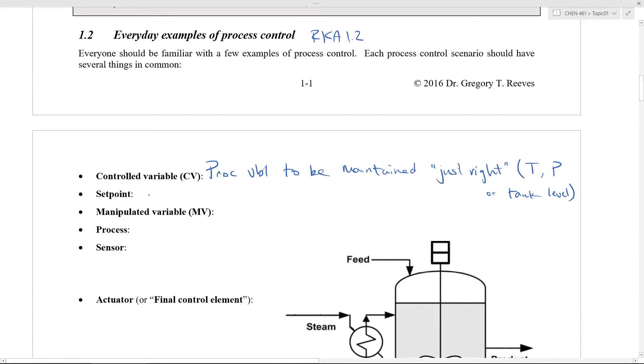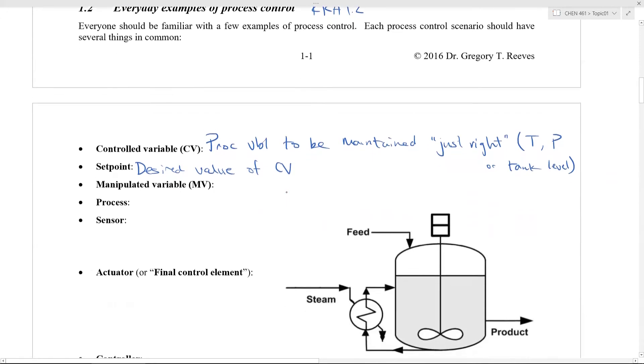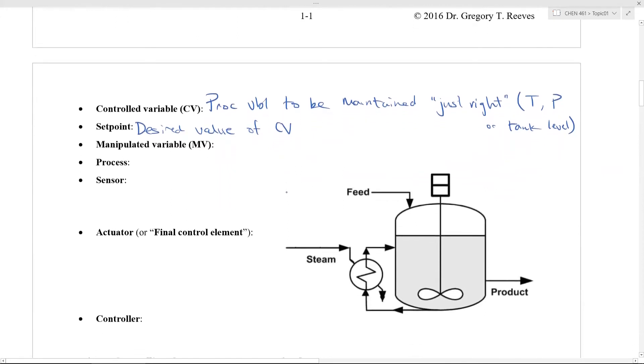You have a set point, which is your desired value of your controlled variable. You have your manipulated variable. And actually, let me scroll down just a second here before I go on. So you have your controlled variable here. Let's say in this particular case, you have a reactor that has to be heated by steam, and you have your product temperature. And that might be your controlled variable, your product temperature.